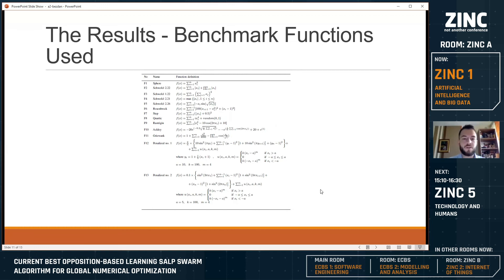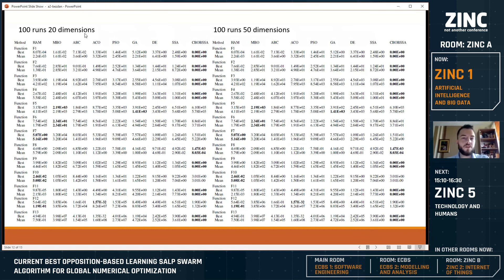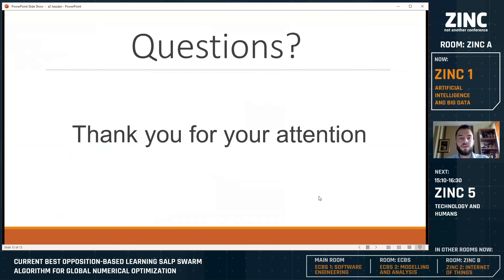These are the benchmark functions I'll speed up a little bit. Here are the results over 20 dimensions and 50. As you can see, these are already proven well-optimizing functions, some you may have heard about like the genetic algorithm, artificial bee colony. These are the results that our algorithm was better in.